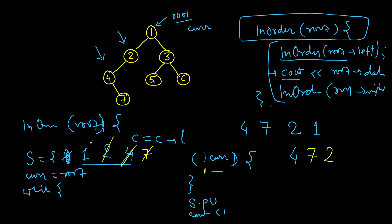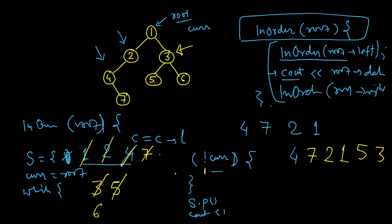We again pop, which is one — it is popped and we print it. Now we make current equal to its right which is three. Till current is there we keep pushing it into the stack, so three is pushed. Current becomes its left which is five, so five is also pushed, then current becomes its left which is null. We pop five and print it, make its right as current which is null. We pop three and make current its right which is six, then repeat the loop — we push six to the stack. Its left is null so it will straight away pop six and terminate.